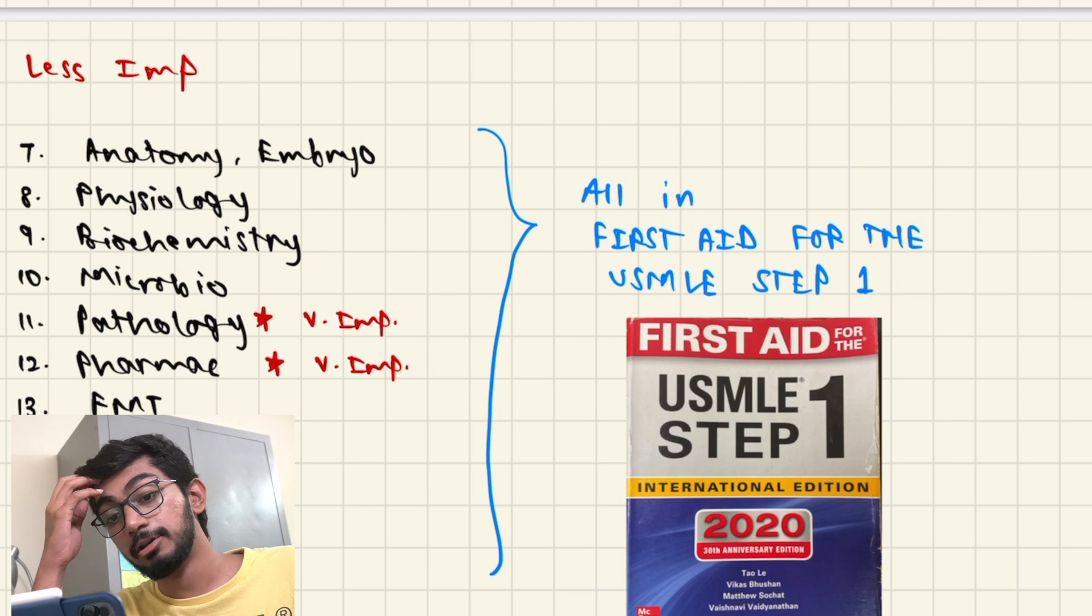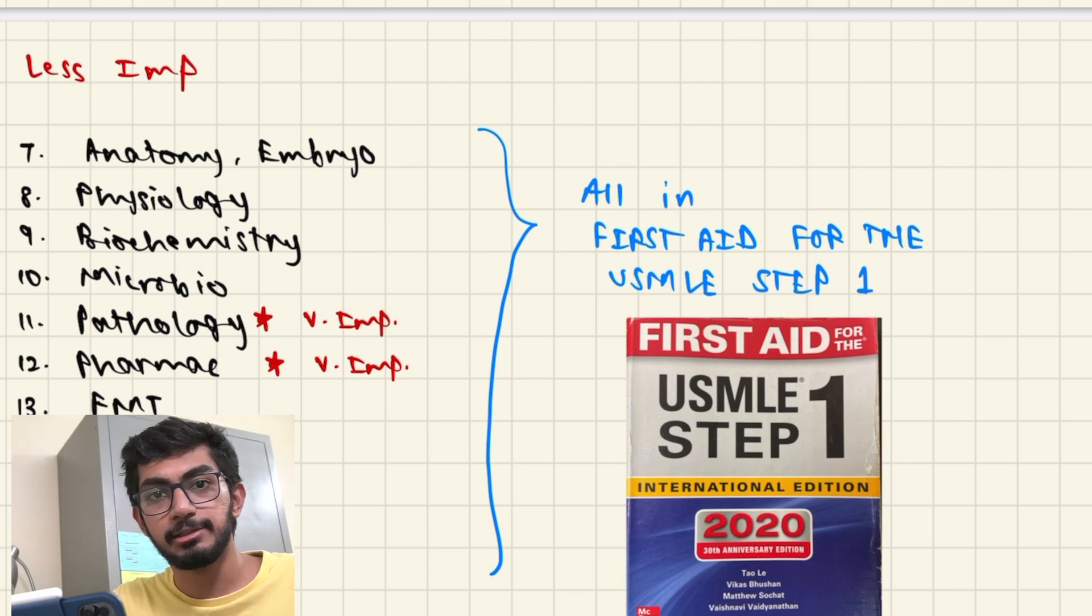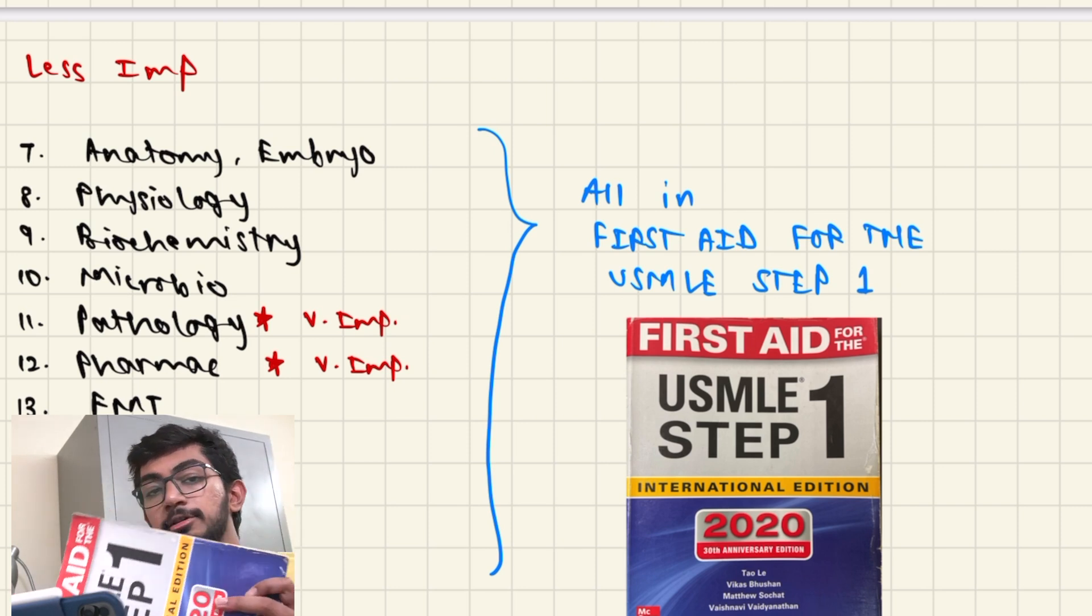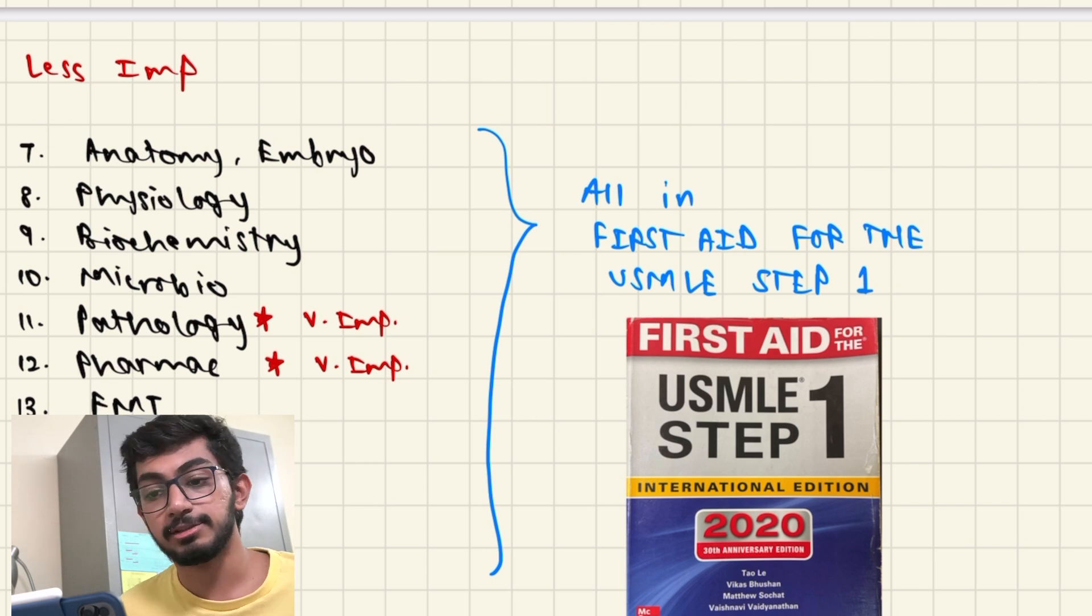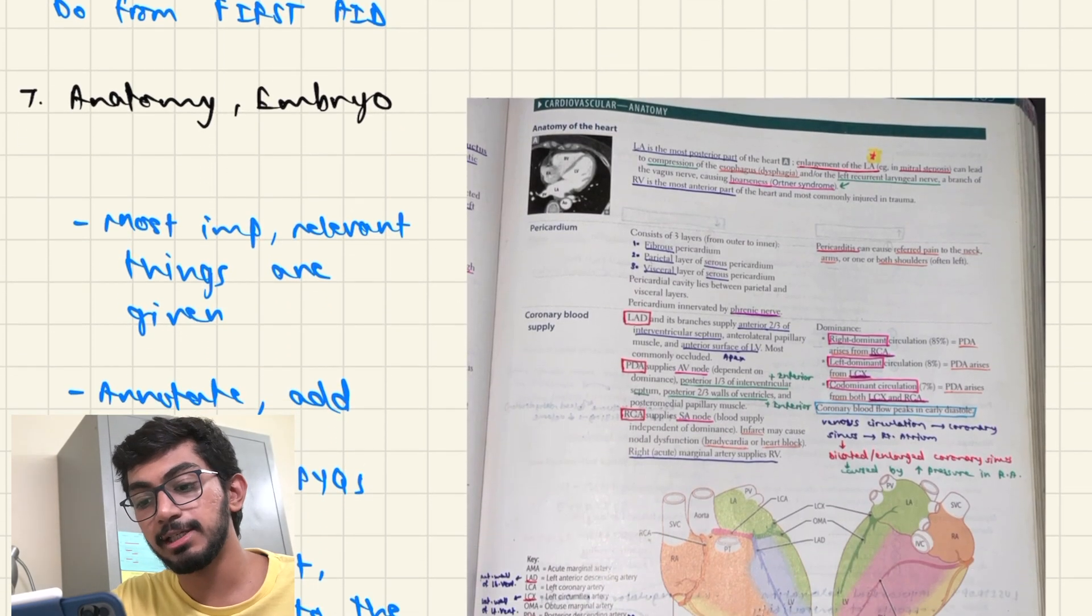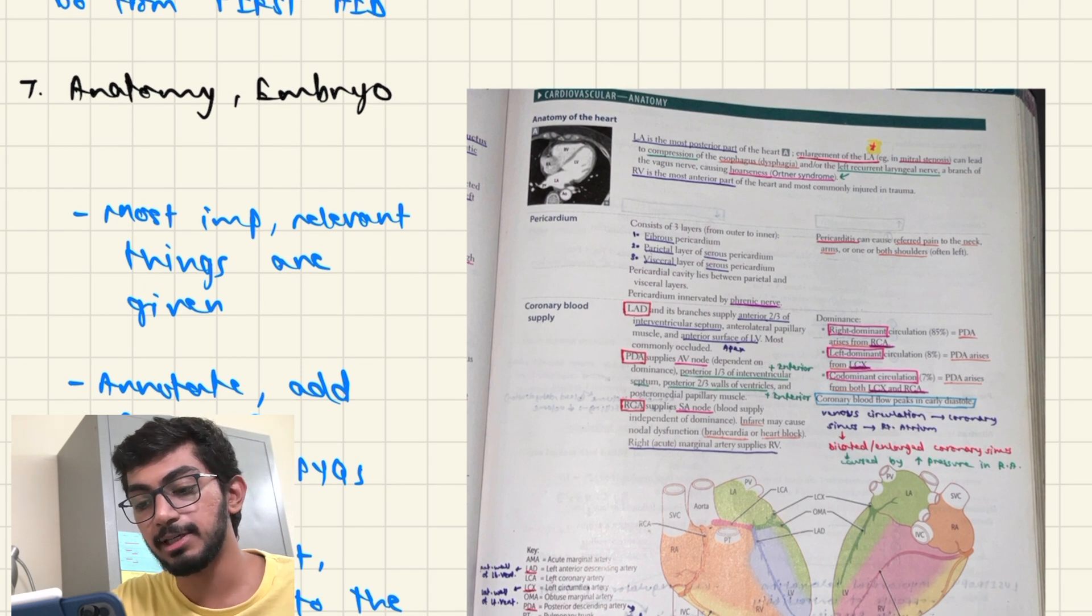And now moving on to the less important topics like Anatomy, Embryology like the first and second year topics which have only 10% weightage according to the notification. And I would suggest you do all of these topics from the First Aid for the USMLE Step 1. This is a picture of my First Aid for the USMLE Step 1. This is the book right here that I used for my USMLE Step 1 exam. And it contains all of these topics like Anatomy, Embryology, Physiology, Biochemistry, Microbiology, Pathology, Pharmacology. FMT is not included in it. But PSM, Orthopedics and Psychiatry is included in it. And I'll show you guys with examples on each topic and how you can study for it.